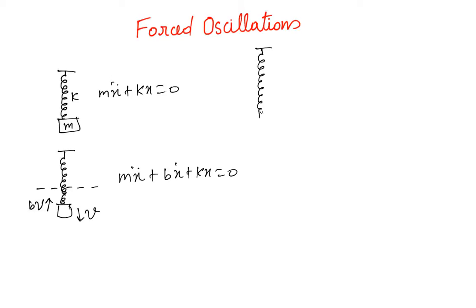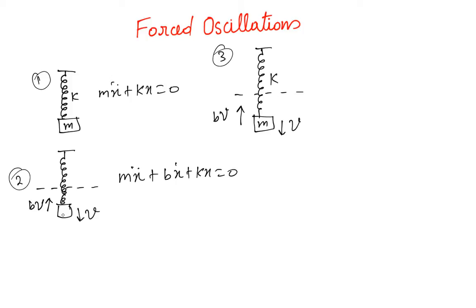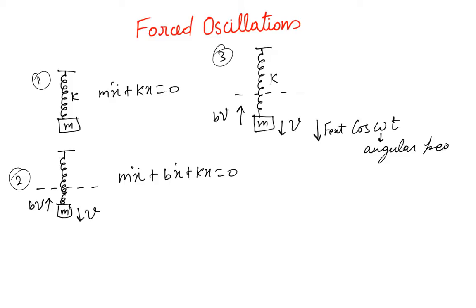This case is the same as the second one but with one important addition. The mass is moving with the damping force BV, spring constant k, and mass m — but also there is an external force acting on the mass. This external force is given as F_external = F_external · cos(ωt), where F_external is the magnitude and ω is the angular frequency.